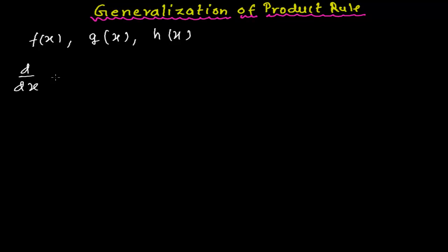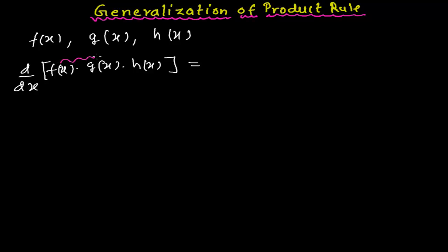With respect to x, the derivative of the product of these three functions — that is f(x)·g(x)·h(x). So what will be the derivative of the product of these three functions? What I can do here is suppose these two, f(x) and g(x), as one function — as the first function — and h(x) as the second function. Now I am going to apply the product rule.